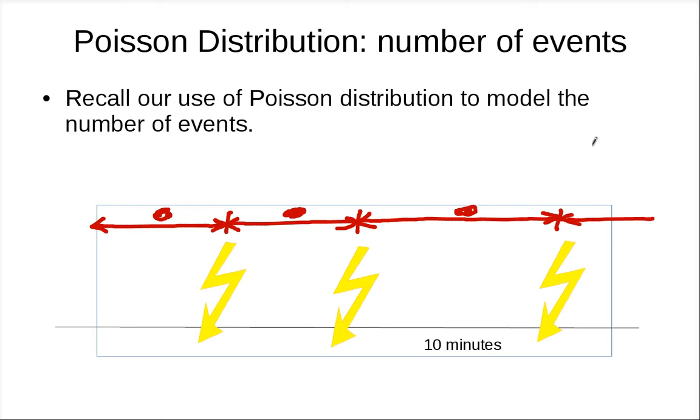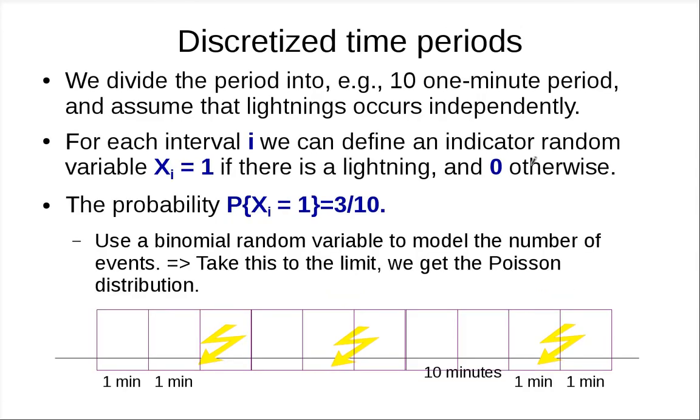So let's use the way we model the number of events in the Poisson case as the guideline. So in the Poisson case, let's look at the first approach. We partition the period into 10 one-minute periods and assume that lightnings occur independently. So instead of just 1, we have 10. And because we use the same model, we can think of this as, we can define an indicator or a random variable to be 1 if there's a lightning, and 0 otherwise.